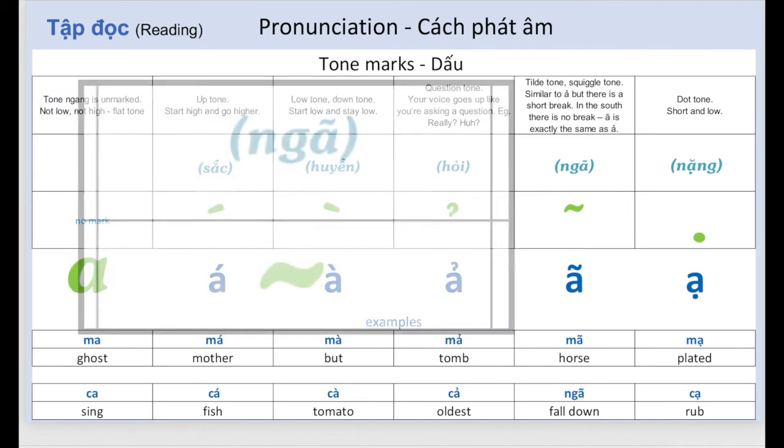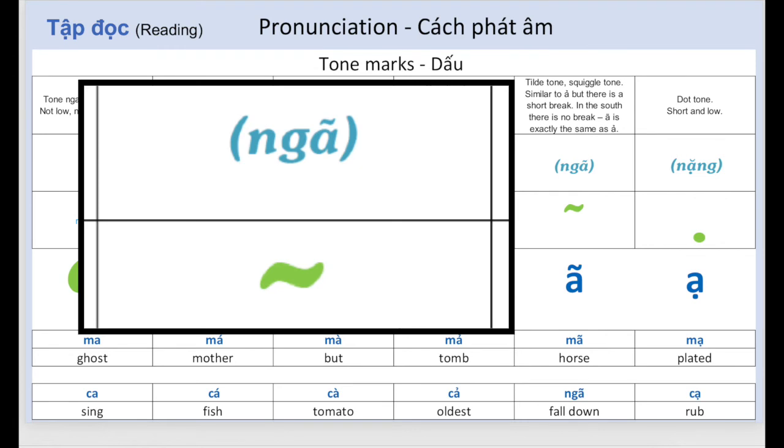This next one, ngã. The tilde or squiggle is hard to distinguish from hỏi. Similar to ả from hỏi, but there is a short break. A. A. A. Examples: Mã, Ngã.